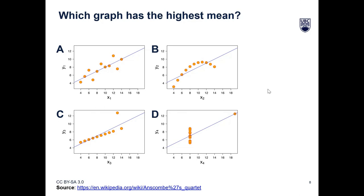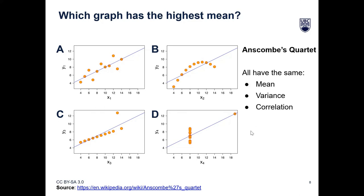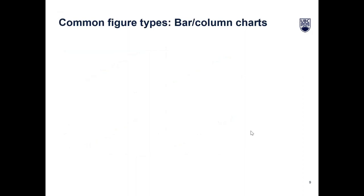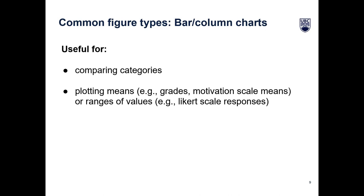We'll get into our most common figure types, starting with bar and column charts, which are probably quite familiar to all of you. Bar and column charts are best when you're comparing different categories of data. They're most useful for plotting means or medians — things like grades, scale means, or Likert scale responses and ranges of values.